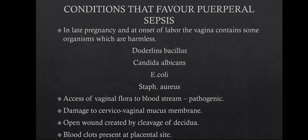The main conditions by which vaginal flora gain access to the bloodstream are: if there is any damage to the cervical or vaginal mucous membrane, if there is any open wound created by the cleavage of the decidua, or if there are any blood clots present at the placental site. Under these three conditions, vaginal flora may gain access to the bloodstream and cause infections.